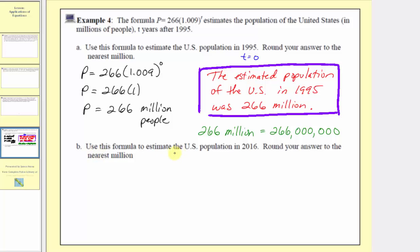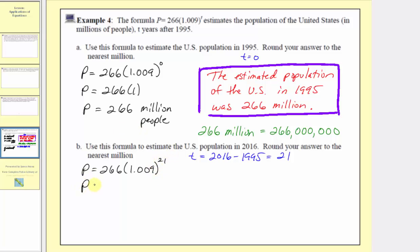For part b, we're asked to use the same formula to estimate the population in the year 2016. First we find the value of t: t equals 2016 minus 1995, which equals 21. So we substitute t equals 21 into the formula to estimate the population in 2016. We'll have p equals 266 times 1.009 raised to the power of 21, and we'll use a calculator to get a decimal approximation, rounding to the nearest million.